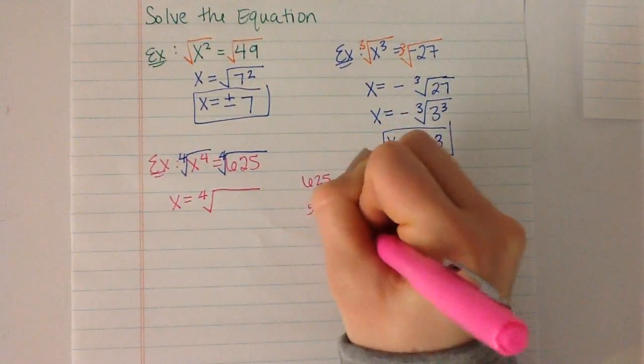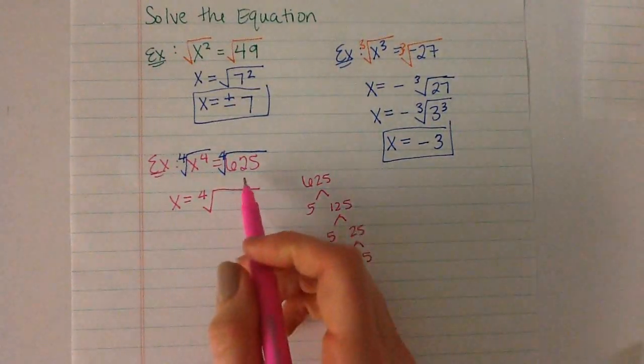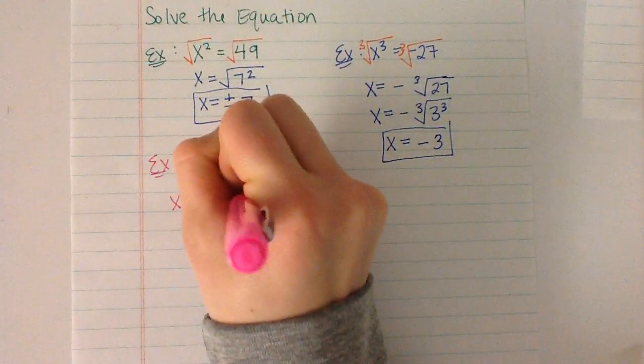125 is 5 and 25, and 25 is 5 and 5. So 625 can be rewritten as 5 to the 4th.